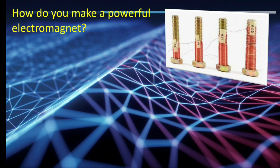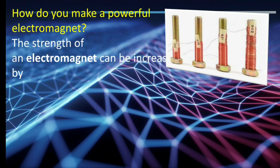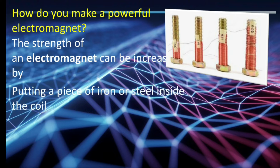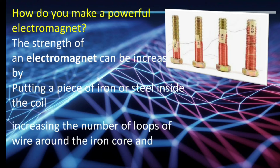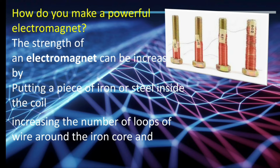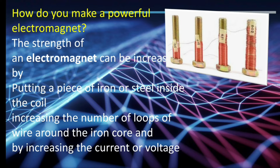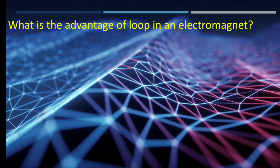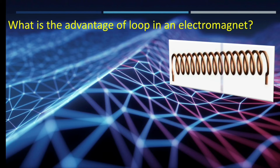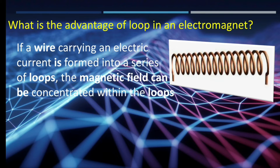The strength of an electromagnet can be increased by: putting a piece of iron or steel inside the coil, increasing the number of loops of wire around the iron core, and increasing the current or voltage. The advantage of the loop shape is that if a wire carrying an electric current is formed into a series of loops, the magnetic field can be concentrated within the loops and will be more powerful.